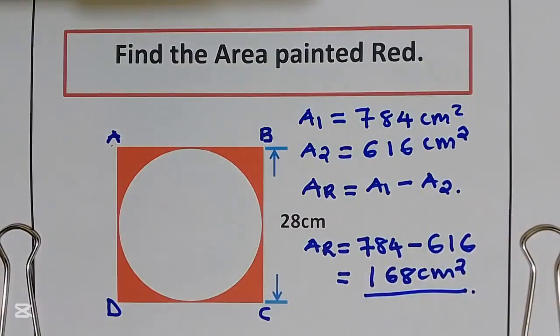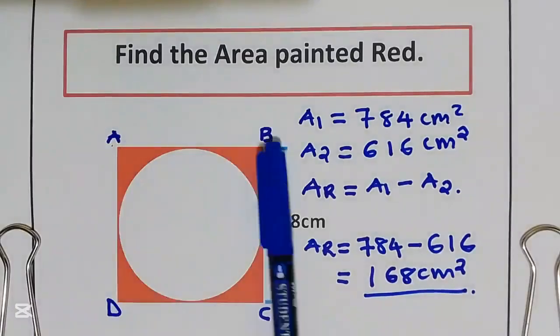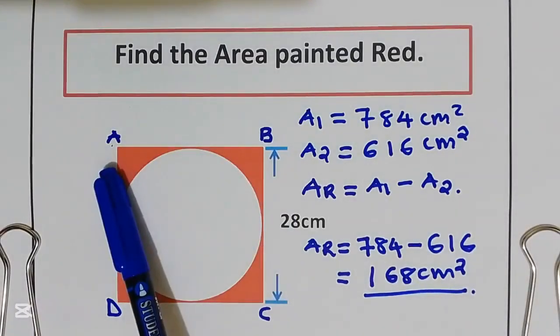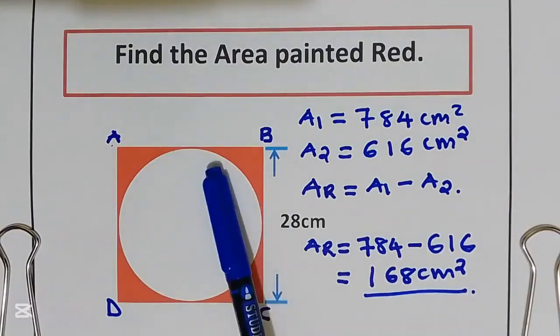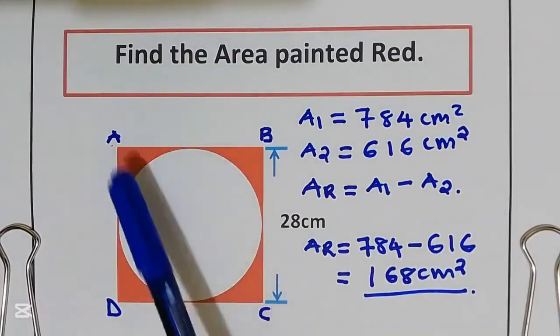I hope you understand how to find the area painted red. We take the area of the square, then we take away the area of the circle to get the area painted red.